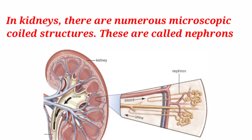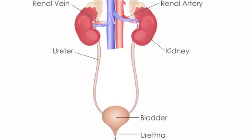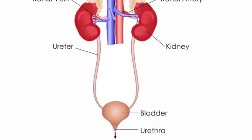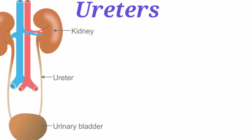The nephrons in kidneys are numerous microscopic structures. The kidney is made up of about a million filtering units, and that unit is known as nephrons. This dark red, bean-shaped organ that you can see is your kidney, and it acts like a filter.